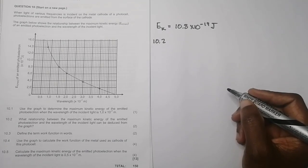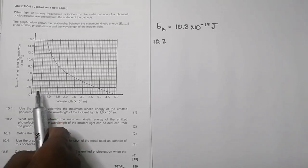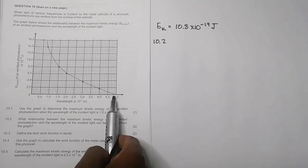So they say use the graph to calculate the work function of the metal used as the cathode of this photocell. So let's have a look at it and analyze this one together. So what is the work function? We know it's the minimum energy required to emit electrons from a metal surface. So what happened when we've got the work function? It means the work function occurs at what we call the threshold frequency, the minimum frequency required to emit electrons. So at that point, it means that our kinetic energy or the kinetic energy of the photoelectrons is still zero.